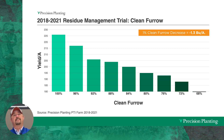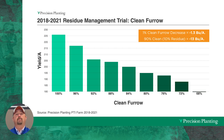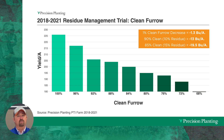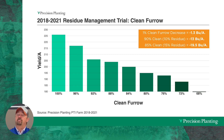To make this easy to understand: if you're running a 90% clean furrow — meaning 10% residue in the trench — we're saying that equates to a 13 bushel yield loss. At 85% clean furrow, in other words 15% residue in the furrow, that's almost 20 bushels — 19.5 bushel corn yield losses. Pretty substantial when we look at residue in the trench.